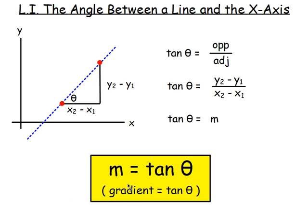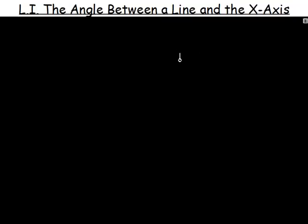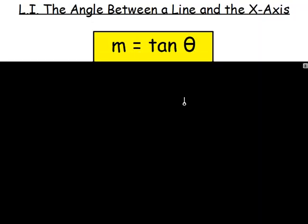What this means is that if you knew the size of this angle, you could work out the gradient of the line. Or if you knew the gradient of the line, you could work out the size of the angle. Let's try a few examples with that. So example number one — there's the formula.